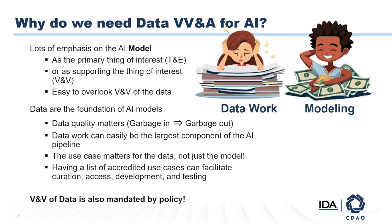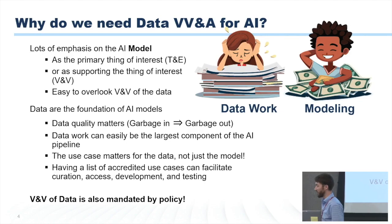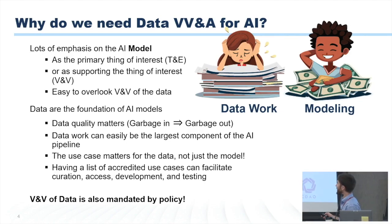Why do we care about VV&A of data specifically for AI? Well, I don't know if anybody here works out — anybody lifts weights — but what's the mantra about leg day with weights? You don't skip leg day. What do people do, though, when they lift weights? Everybody skips leg day. That's essentially the mantra underlying this effort here. There's a lot of emphasis on the AI model, but it's really easy to overlook V&V of the data. And the data is really important.